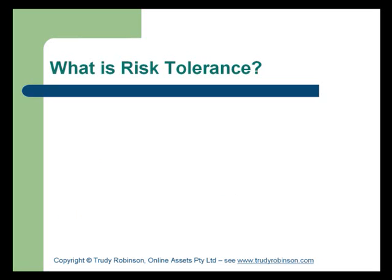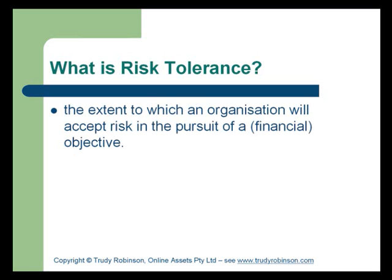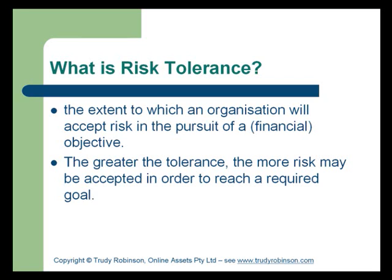Most organisations have some level of tolerance to risk. That means the extent to which that organisation will accept risk in pursuit of something they have specifically as an objective — whether financial or strategic. The more important that objective, the greater the tolerance may be. An organisation may choose to accept and manage risk in order to achieve a required outcome. An example may be the strategic intent of entering a new market, such as taking over another organisation. The risks involved might be substantially high, but the overall objective of meeting that strategic goal may override the risk.